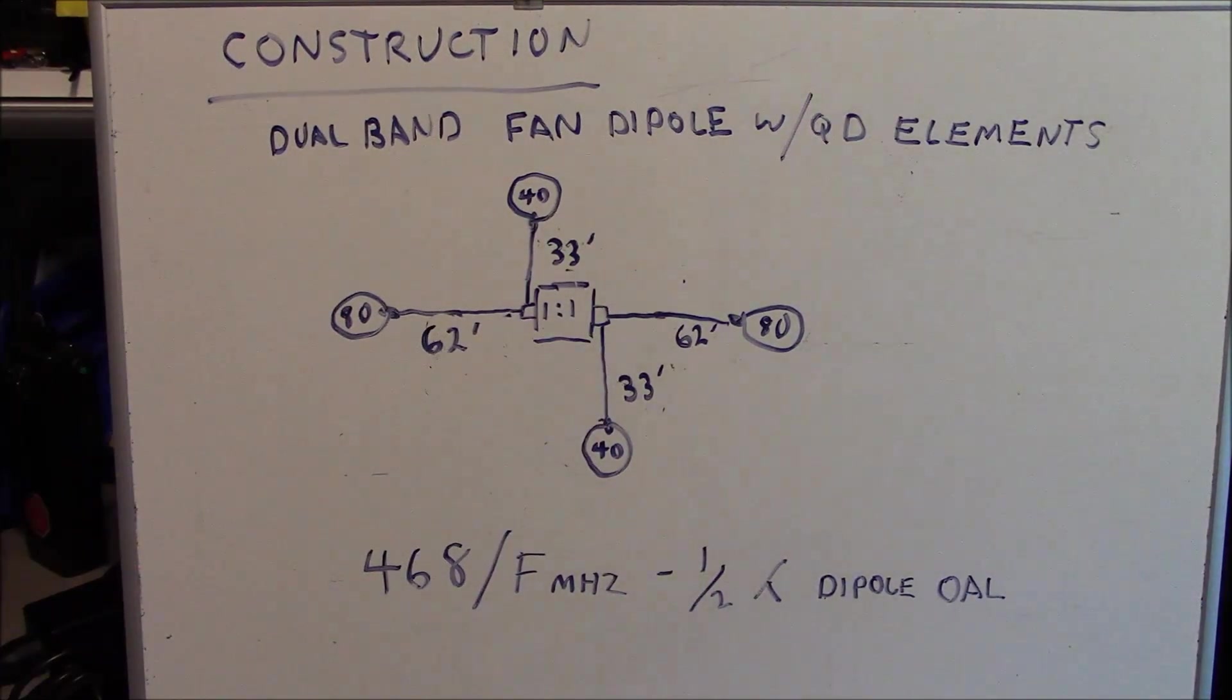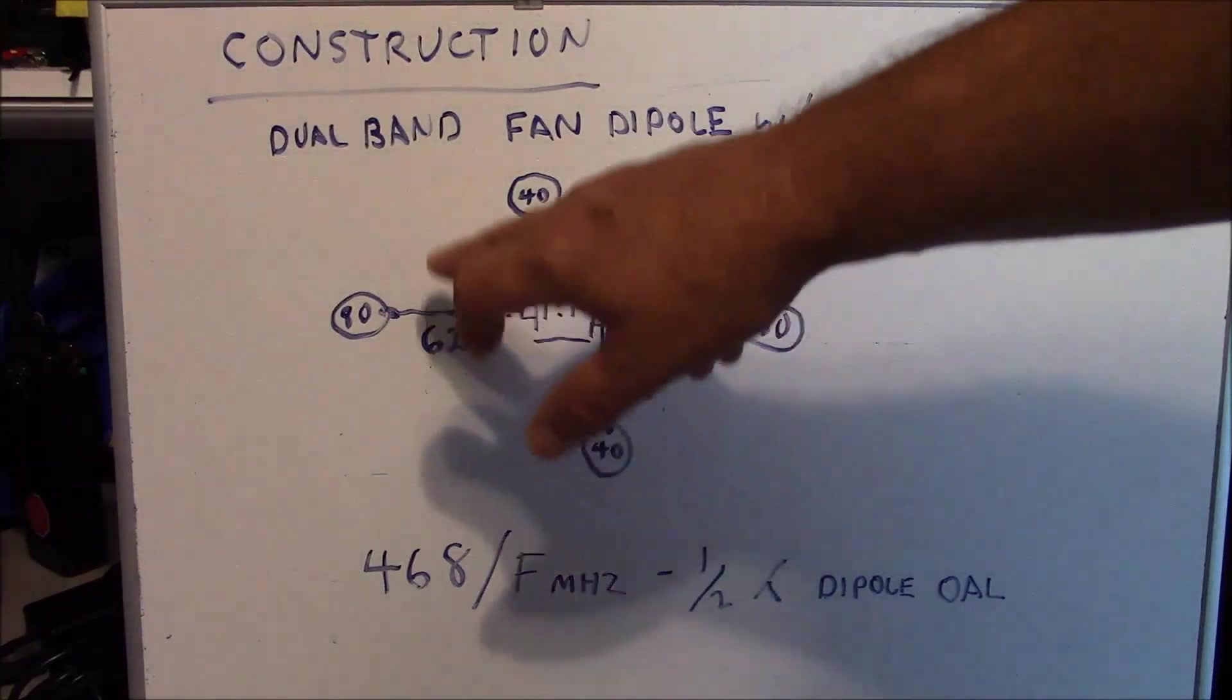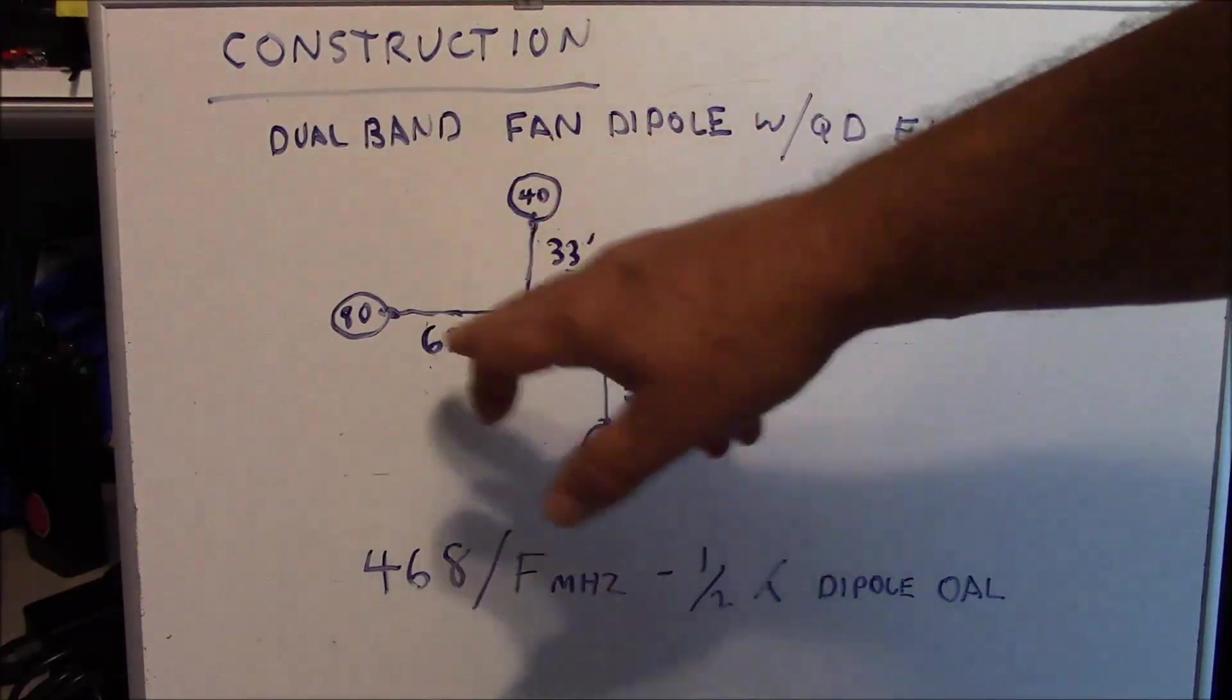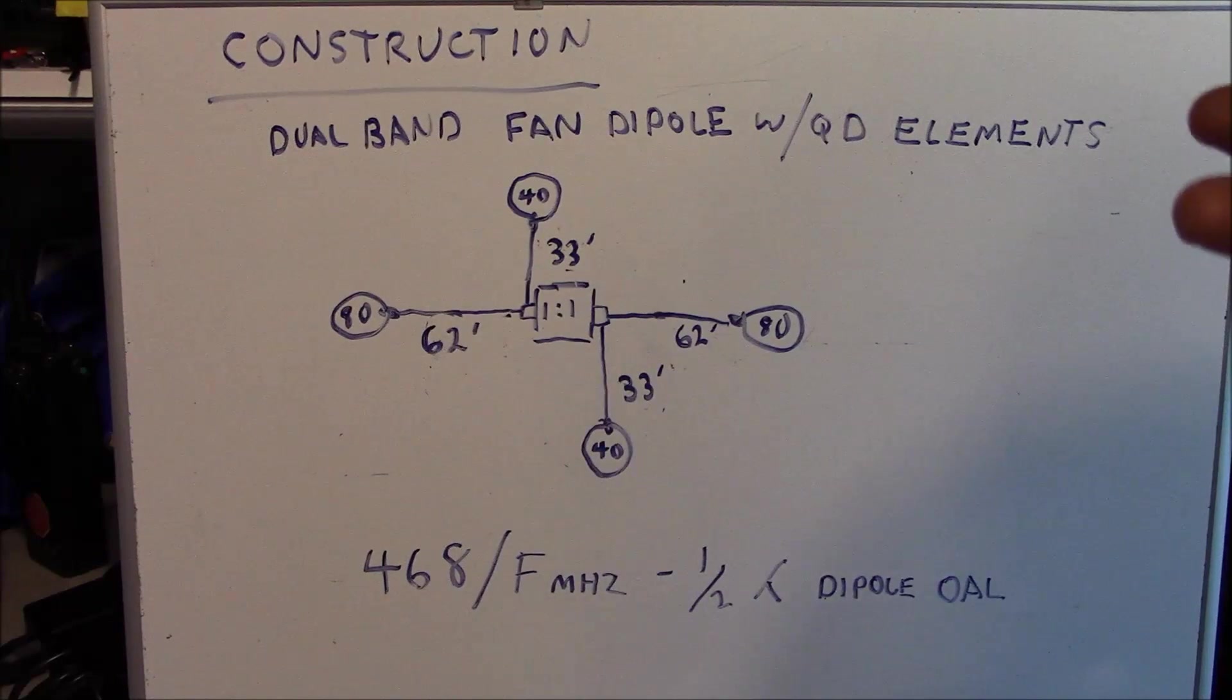If you just wanted to use 40 meters or just 80 meters, you would just go ahead, like for 80 meters, you would just delete the 40 meter elements and leave the 80 meter elements. So if you're going to run it as a single band dipole antenna, you could certainly do so. And that is key to the flexibility of the system.